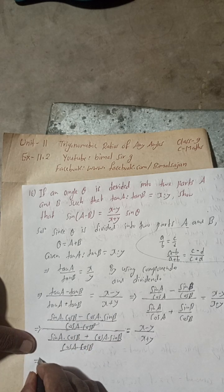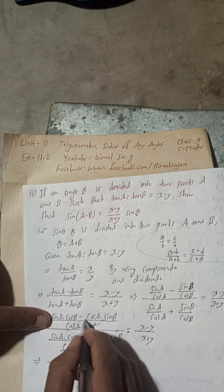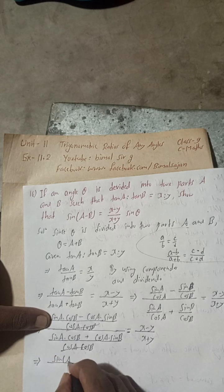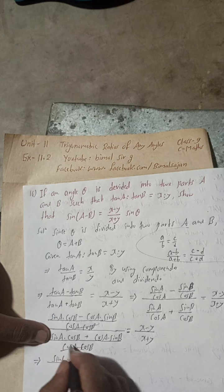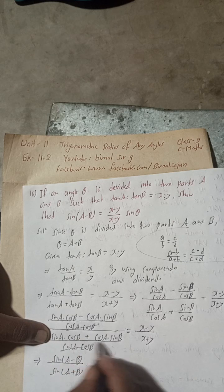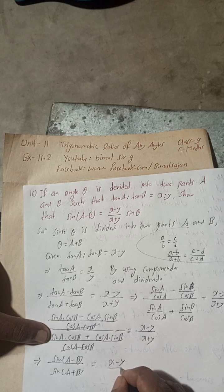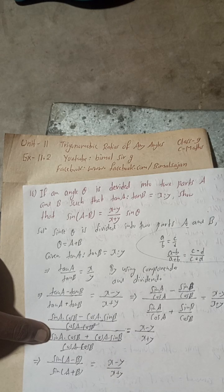This implies here now, this is the formula. Sin A cos B minus cos A sin B is the formula for sin(A-B) formula. And this is the formula for sin(A+B). Sin(A+B) is sin A cos B plus cos A sin B. This equals (X-Y)/(X+Y).